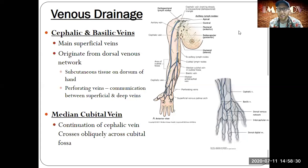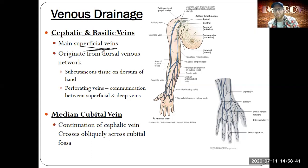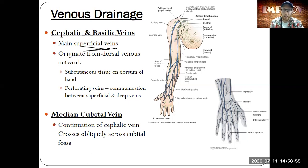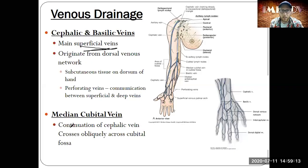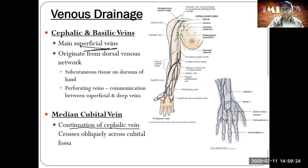A key way to distinguish deep versus superficial veins: deep veins will have a corresponding artery. The radial vein has the radial artery; the brachial vein has the brachial artery. But the cephalic and basilic are superficial — they don't have any arteries with them, they're just veins. The median cubital vein is a continuation of the cephalic vein, getting off the superhighway onto a smaller highway.